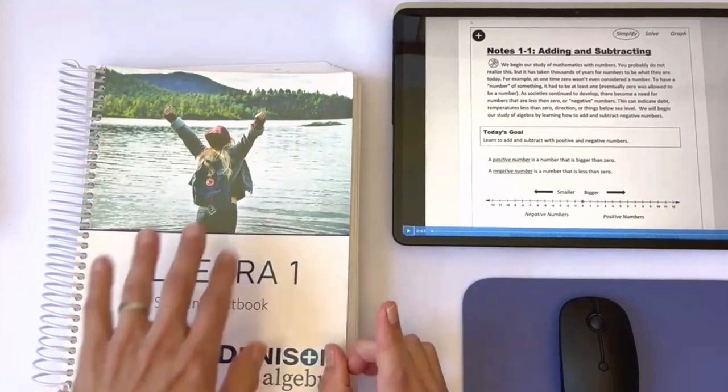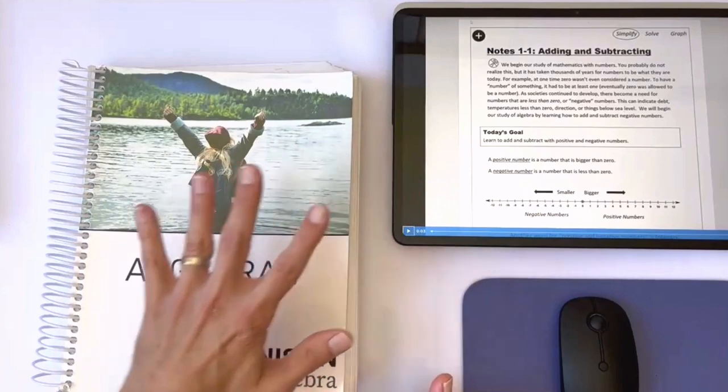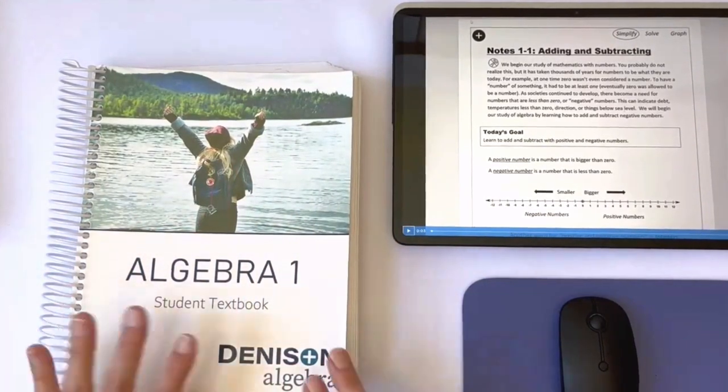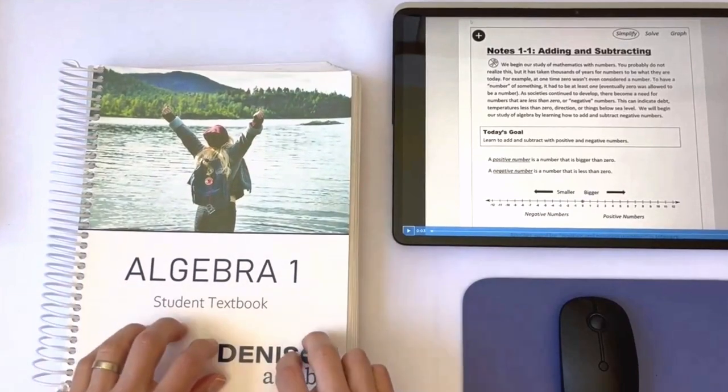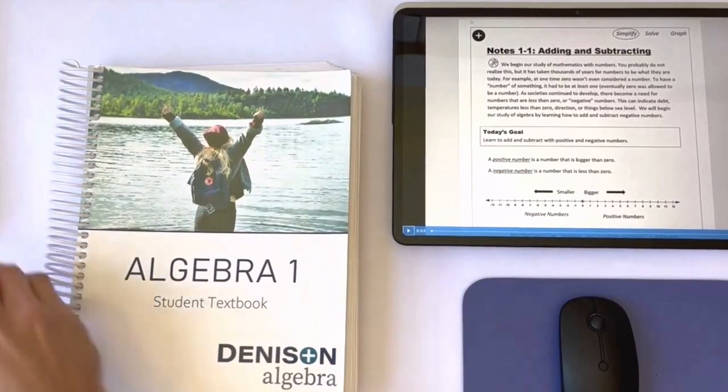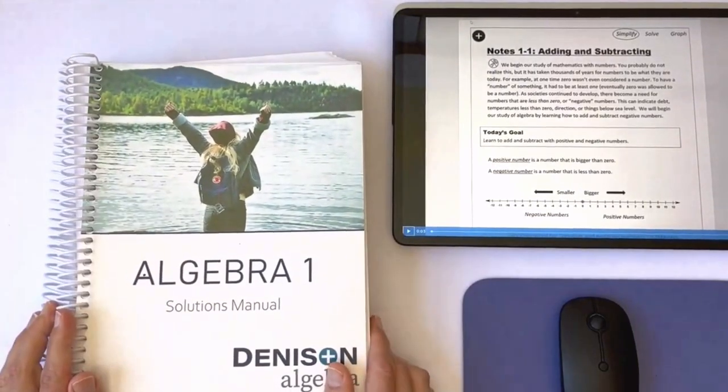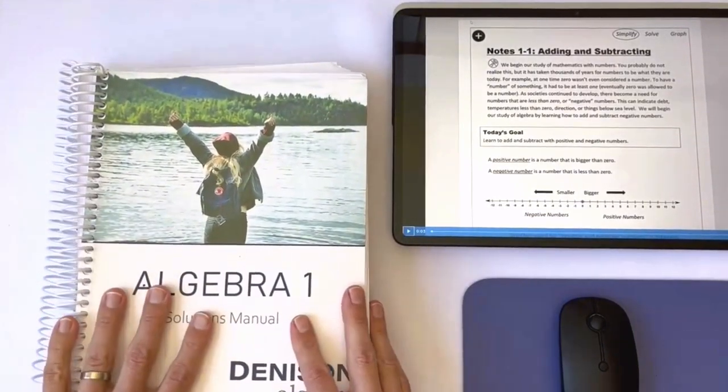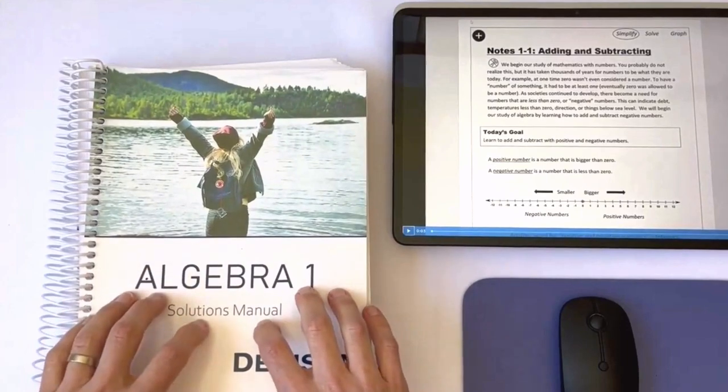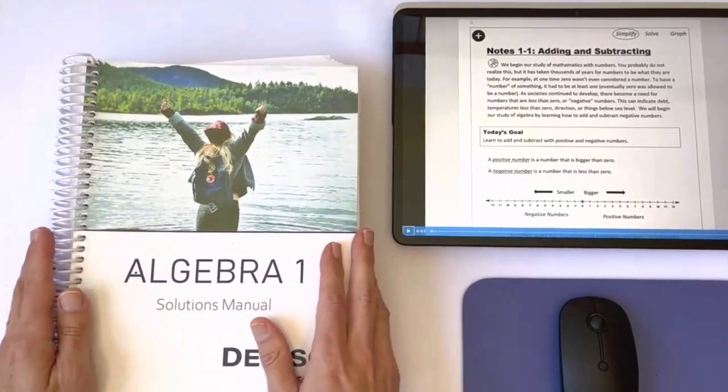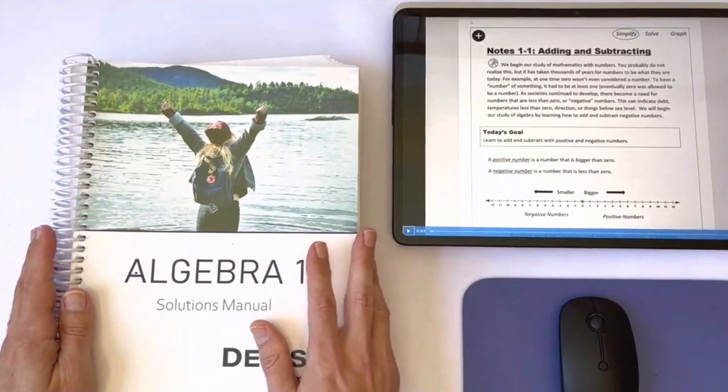Each day a student does three things. First, they watch the teaching video for whatever lesson they're on following along and taking notes right here in the book. Second, they turn the page and complete the assignment right here in the book. Third, they grab the solutions manual and check their work. They can use the solutions video if they need some help as well. A complete lesson is designed to take no more than 45 minutes total in our standard courses.